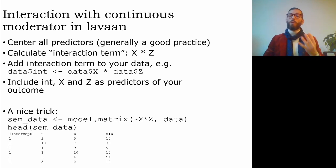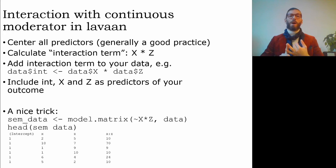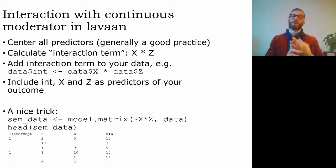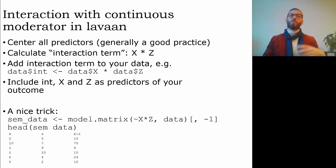The resulting object semdata has four columns: an intercept column with value 1 for every participant, a variable X, a variable Z, and a new column of X multiplied by Z. This data frame gives all variables needed to analyze a model with an interaction between X and Z. Because R doesn't require manually including the intercept, we can remove the first column from the data.